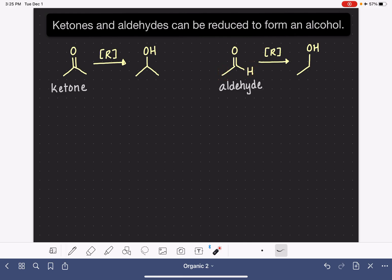So both of these are being reduced. We know that they're being reduced because we're getting the addition of a hydrogen atom to the molecule. There are three different types or three different sets of reagents that we can use to perform this type of reduction.